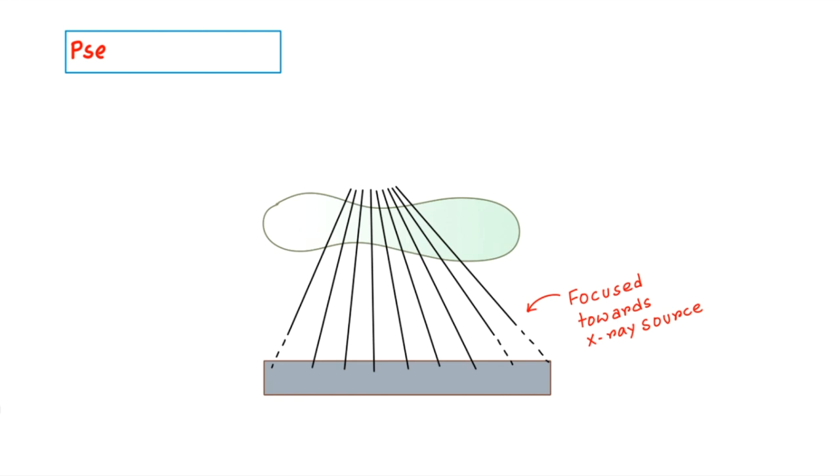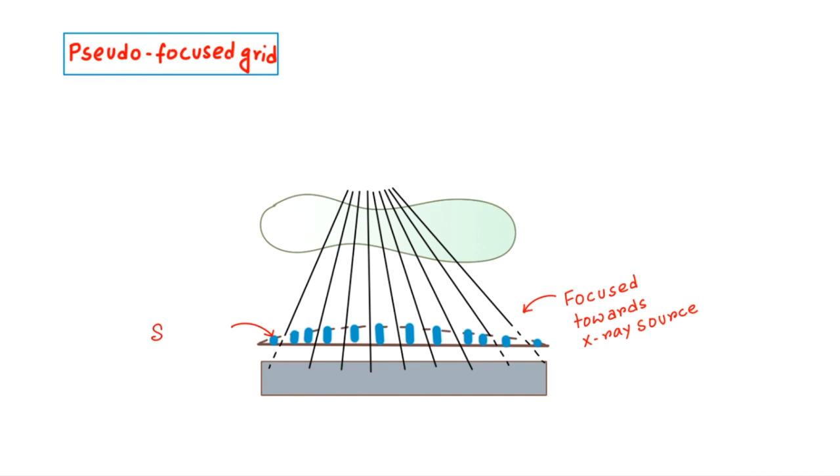Next type is pseudo-focused grid. In this type, there is progressive diminution in the height of lead strips from the center to the periphery. As the strips are shorter at the periphery, the primary photons are allowed to pass.